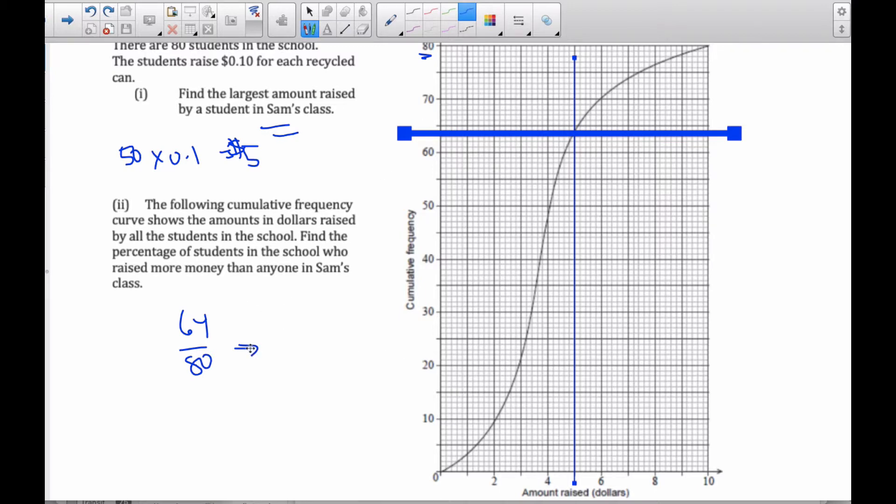So that means then more than 64 students. So that is going to be 80 minus 64. 16 out of 80 is how many raise more than anyone else in Sam's class. So if I do 16 divided by 80, that is 20%. So therefore, 20% of students raise more than anyone else in Sam's class. That's how we use our cumulative frequency.